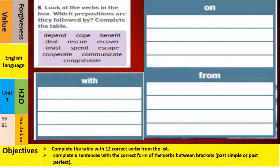And now to the second task and the last task of this lesson—of course, in the book, because we may finish with a game. Someone to read the instruction B: look at the verbs in the box. Which prepositions are they followed by? Complete the table. The verbs are depend, cope, benefit, deal, rescue, recover, insist, spend, escape, cooperate, communicate, congratulate. Let's do it. Pause the video and try to put each verb in the appropriate box. Means match the verb with the suitable and the best preposition to be used with: with, on, and from.